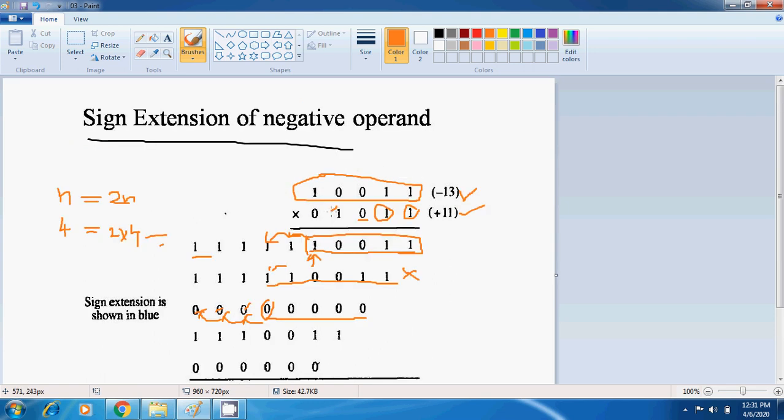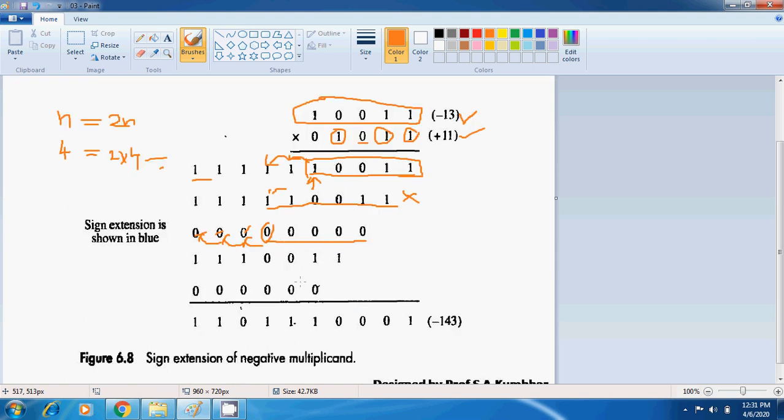In the fourth iteration we are going to multiply 1 to the multiplicand. So here we are basically writing 1 0 0 1 1 as a part of partial product, and the 2 bits are again filled with or extended with sign.